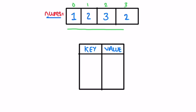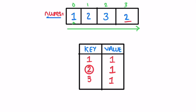To fill the hash map, we iterate through the input array from left to right. We start with the first element: 1 is not present in the map, so we add it with frequency 1. Next, 2 is not present, so we add it with frequency 1. Then 3 is not present, so we add it with frequency 1. Next element is 2 again — it is already present, so we increment its frequency by 1, making it 2. We've now reached the end of the array and the hash map is ready.